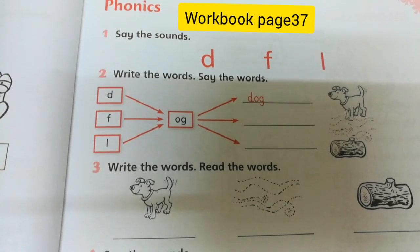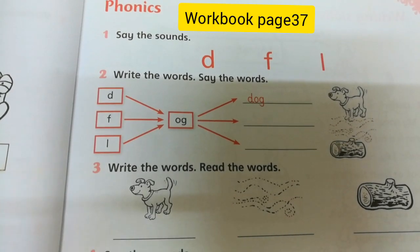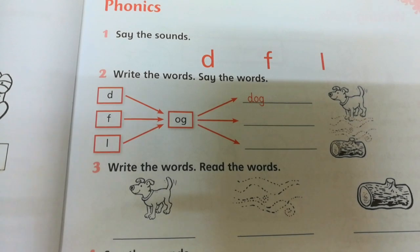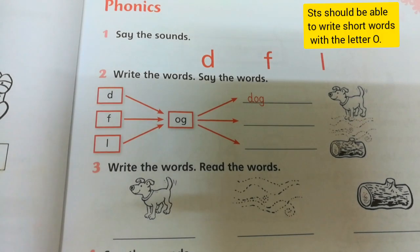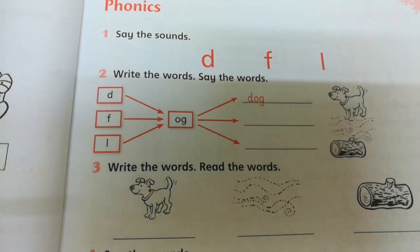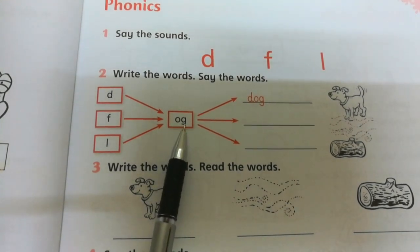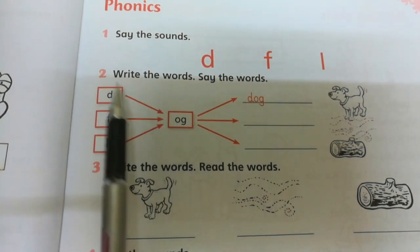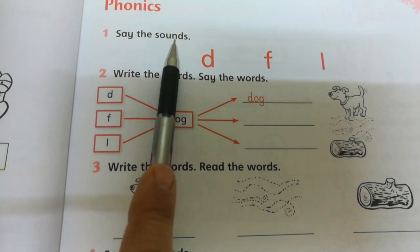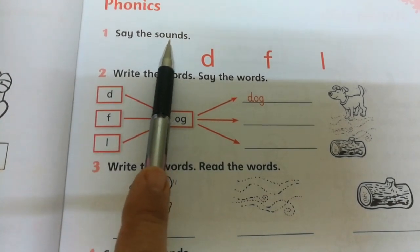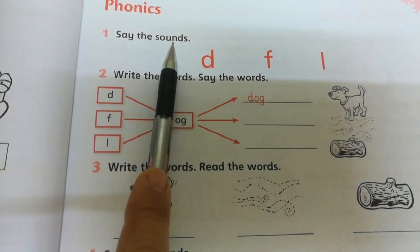Hello children, how are you? Our lesson today is about the letter O. It has a sound — the sound of O. Now say the sounds: O, O.